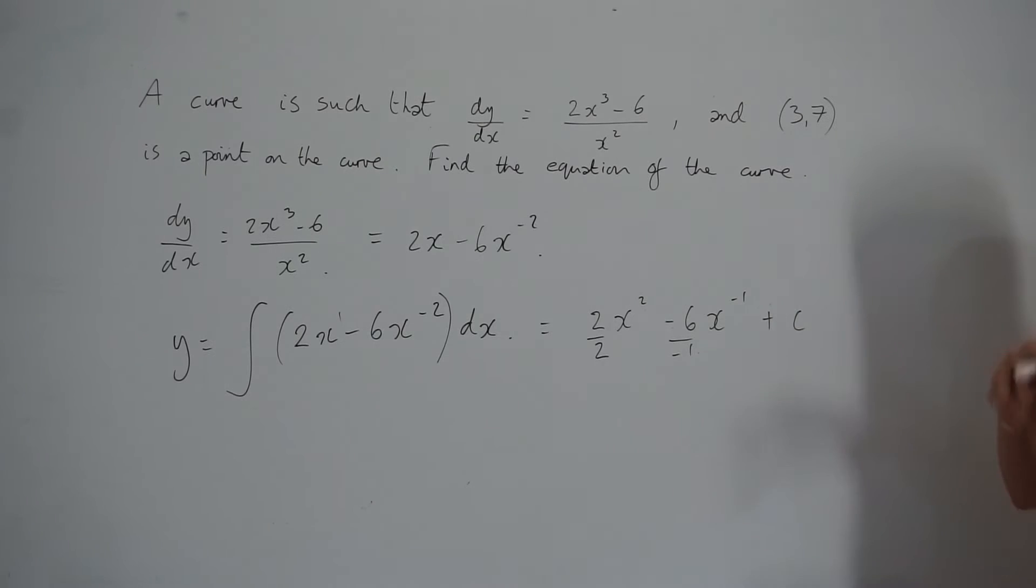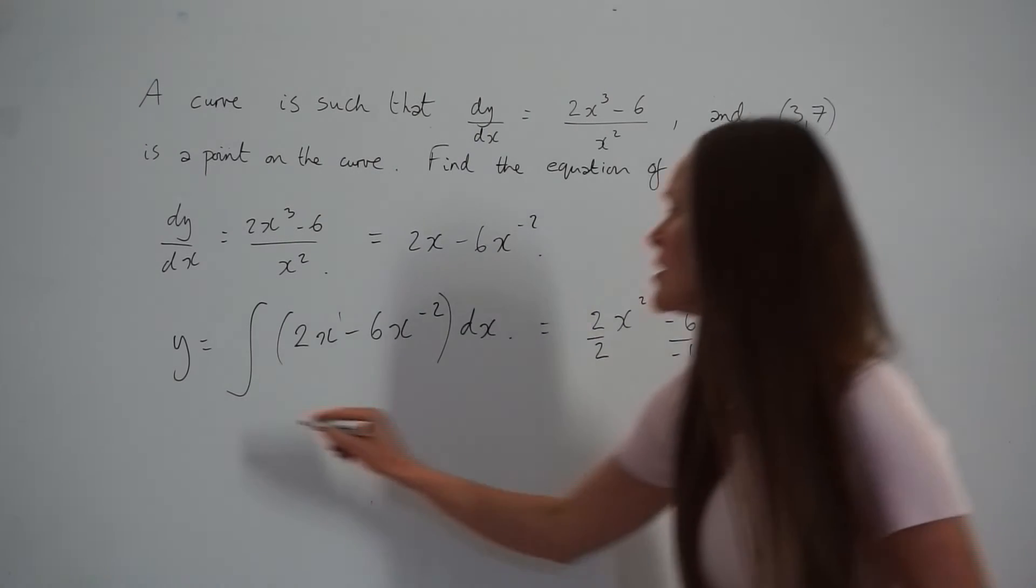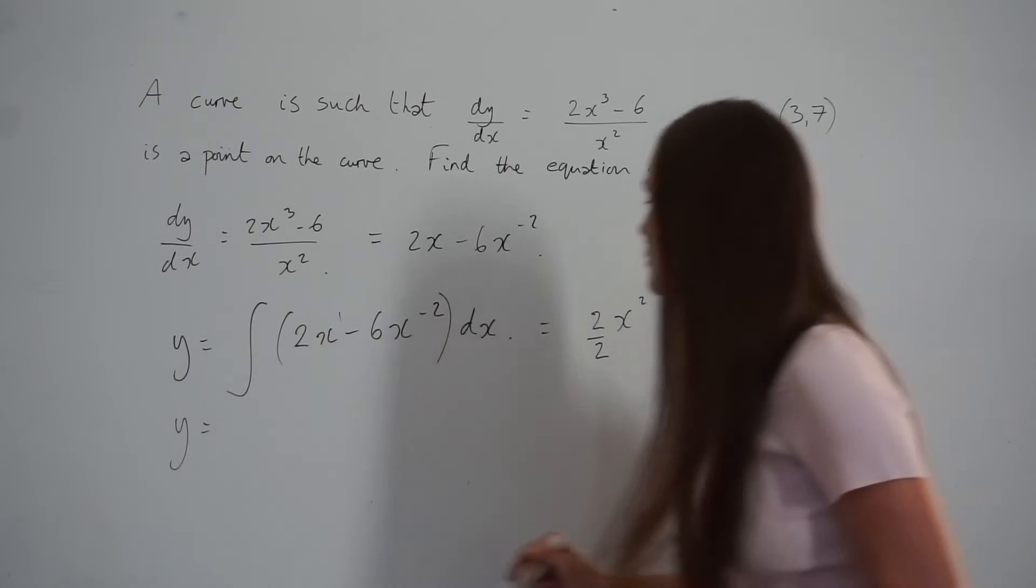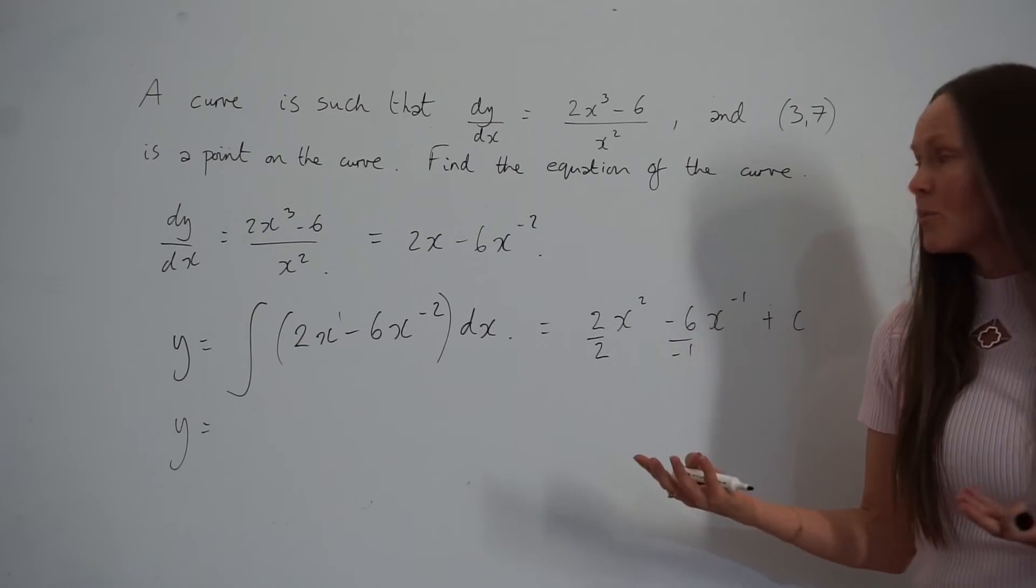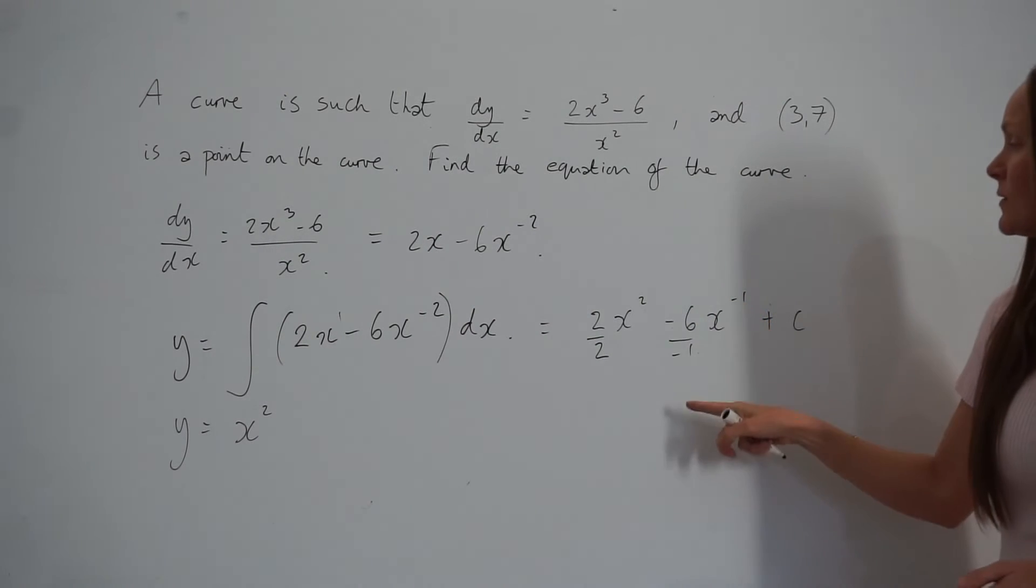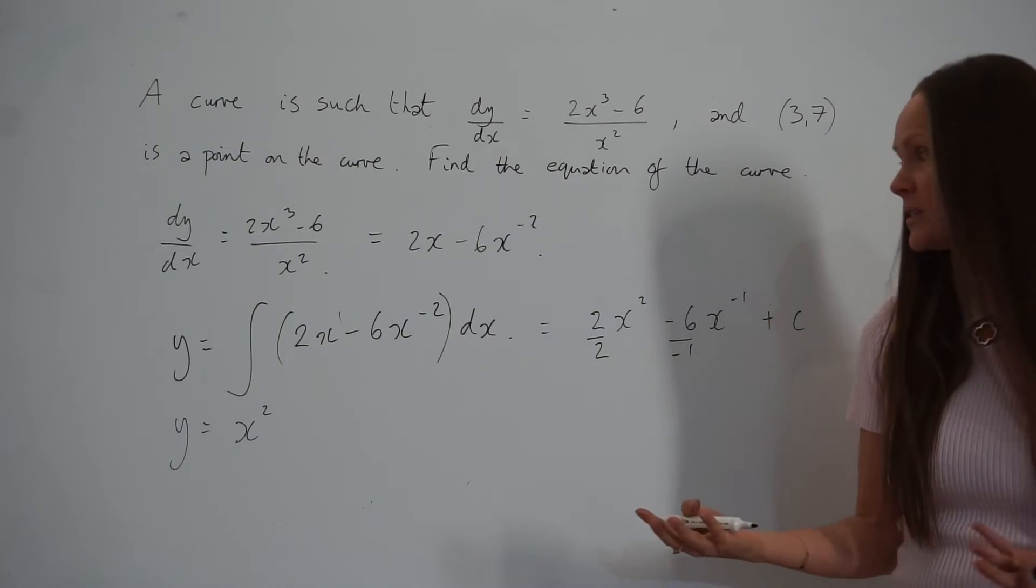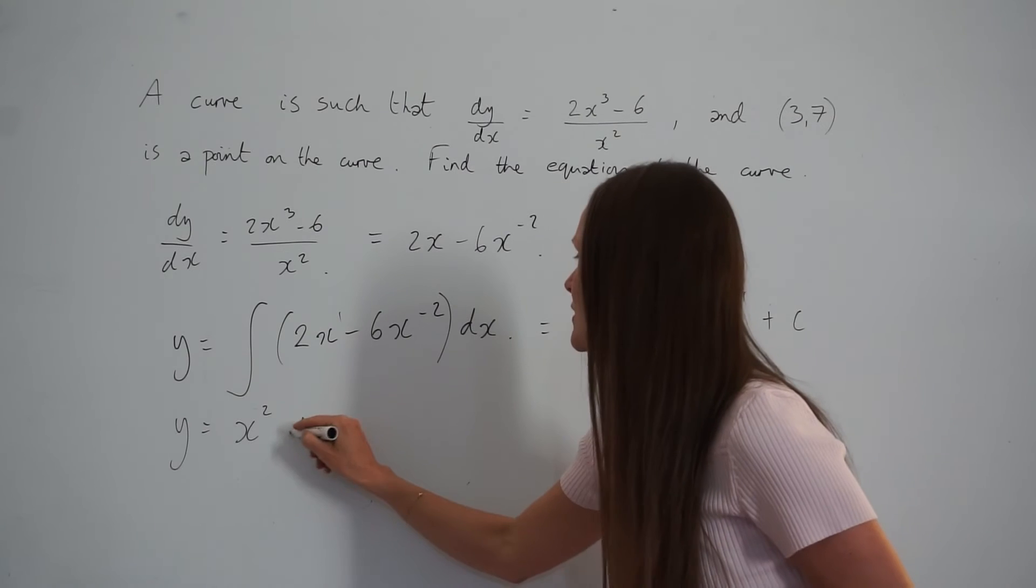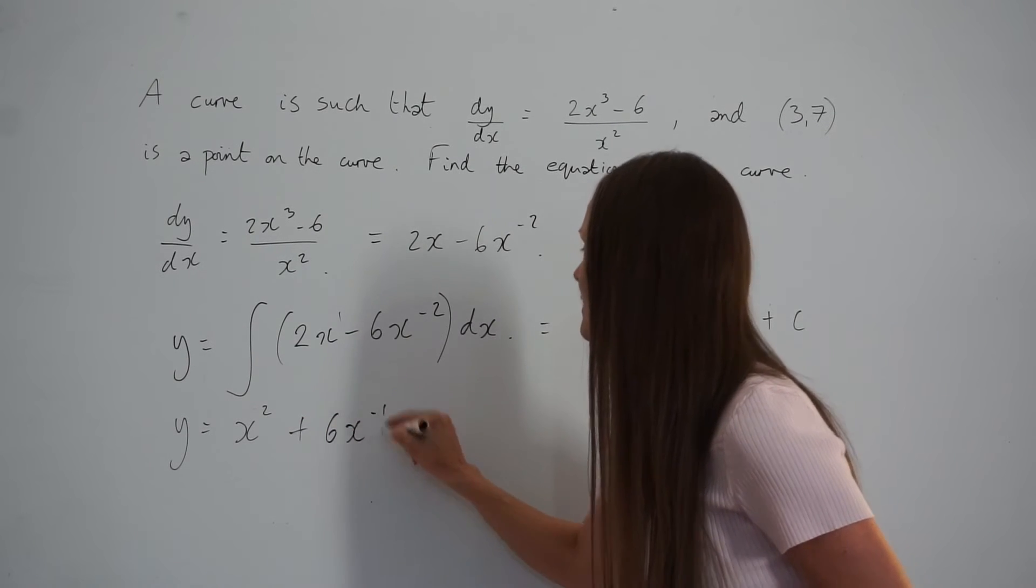I'm just going to rewrite the equation and simplify. So y equals 2 divided by 2, which is 1, so we have x². Then we have -6 divided by -1, which is positive 6, so we have 6x to the power of -1.